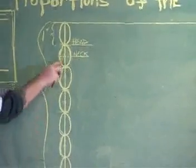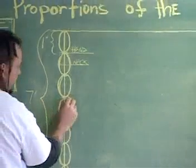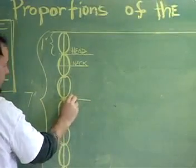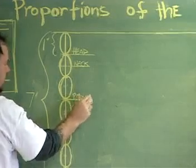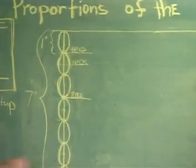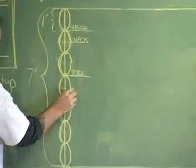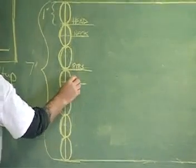Go to the bottom of the third head. Label this one ribs. Go to the center of the fourth. Make a little line. This one is guts.